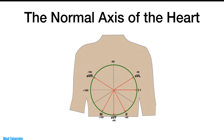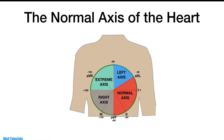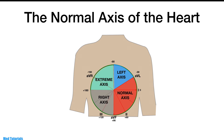What is the normal axis of the heart? If the axis lies anywhere between minus 30 degrees and plus 90 degrees, it is considered to be normal axis. If the axis lies between minus 30 degrees and minus 90 degrees, it is considered to be left axis deviation. If the axis lies between plus 90 degrees and plus 180 degrees, it is considered to be right axis deviation. If the axis lies between plus 180 degrees and minus 90 degrees, it is considered to be extreme axis deviation, or sometimes called indeterminate axis.